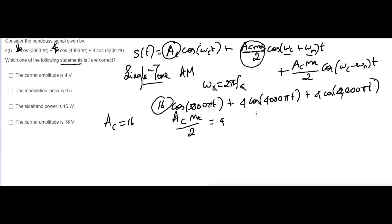Already we know Ac equals 16, so automatically you can write 16*ma/2 = 4. You can cross multiply, so ma equals 2*4 divided by 16, which equals 1/2, which equals 0.5.